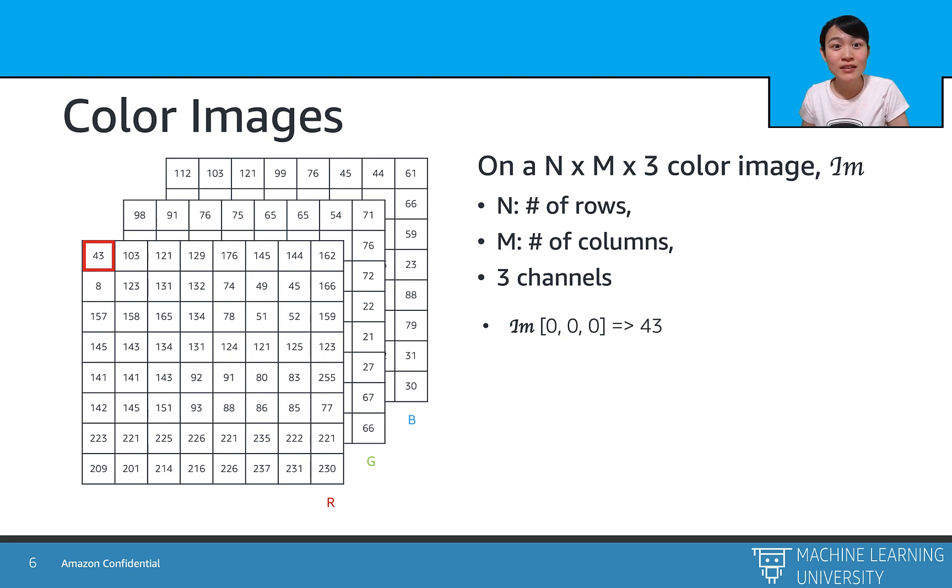For example, the upper left corner of the red channel has a value of 43. The upper left corner of the green channel has a value of 98. And here, the lower right corner of the blue channel has a value of 30.